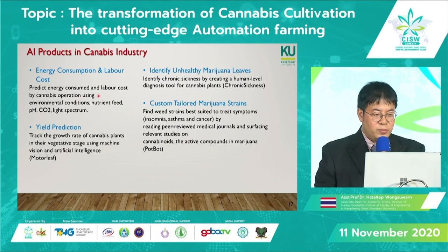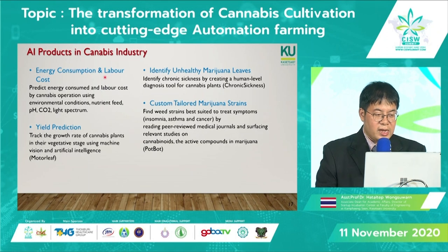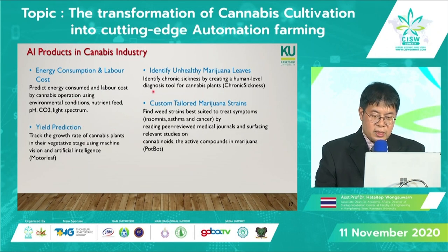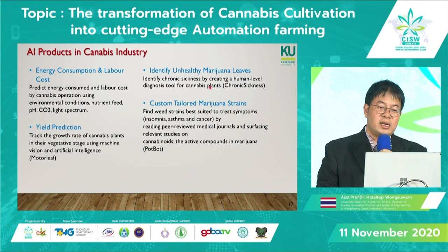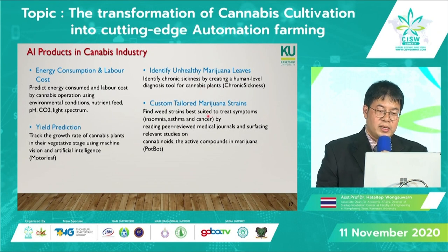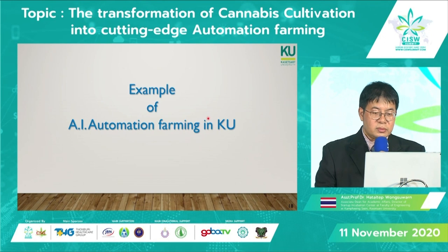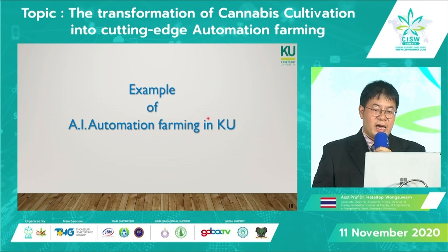In the commercialization process, AI helps with energy consumption, labor cost reduction, yield prediction, and also medical contributions such as identifying unhealthy marijuana leaves or calculating marijuana strength. Here you can see an example of AI automation farming at Kasetsart University.